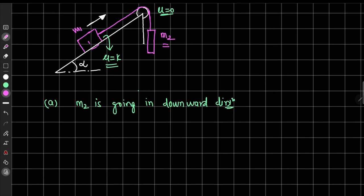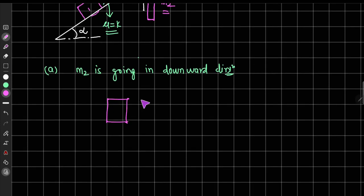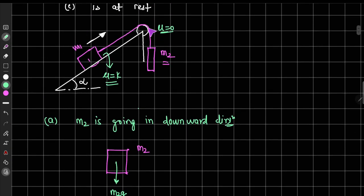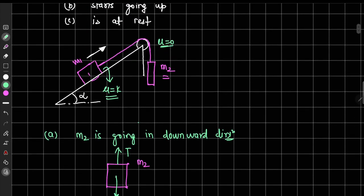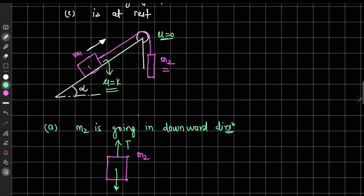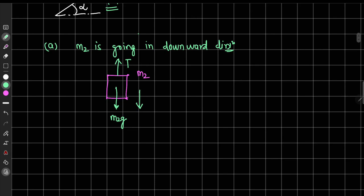Let us draw the free body diagram of mass m2. We will have the gravitational force m2g in the downward direction and tension T in the upward direction, since the thread always pulls the mass. As m2 is going downward, the acceleration is in that direction, so the force equation is: m2g minus T equals m2 times a. This is our first equation.